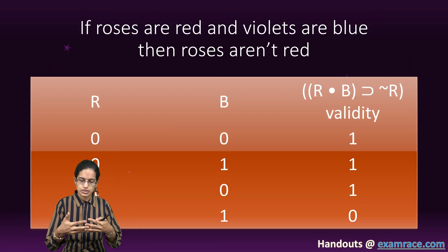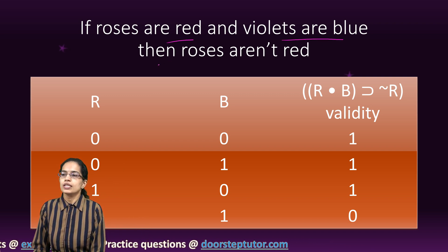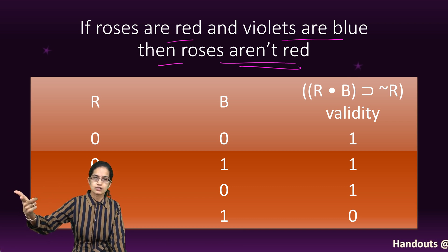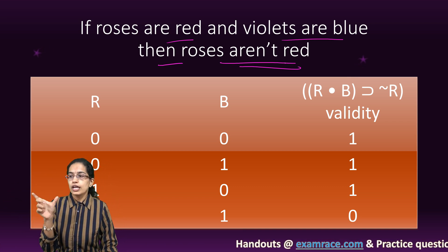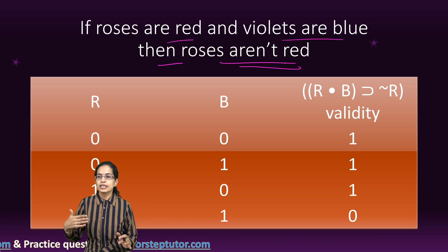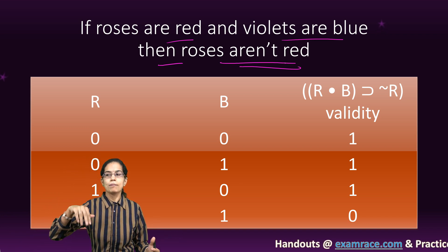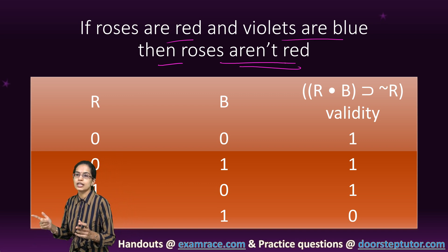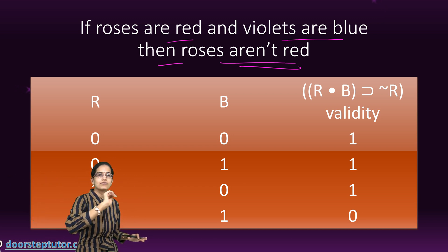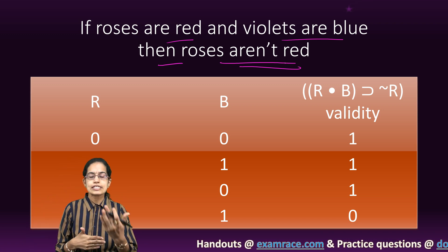Compound statements are statements with multiple parts. For example: 'If roses are red and violets are blue, then roses aren't red.' This is a contingency. If the if-condition is satisfied — roses are red — then 'roses aren't red' is false. But if I go to a garden with no red roses, the if-statement becomes false, and the then-statement automatically becomes true. So this statement is sometimes true, sometimes false.